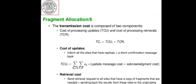The transmission cost function is composed of two components: the cost of processing updates TCU and the cost of processing retrievals TCR, so TC equals TCU plus TCR. For updates, it informs all sites that have replicas plus a short confirmation message back. For retrievals, it sends the retrieval request to all sites that have a copy of the needed fragments, plus sends back the results to the originating site.